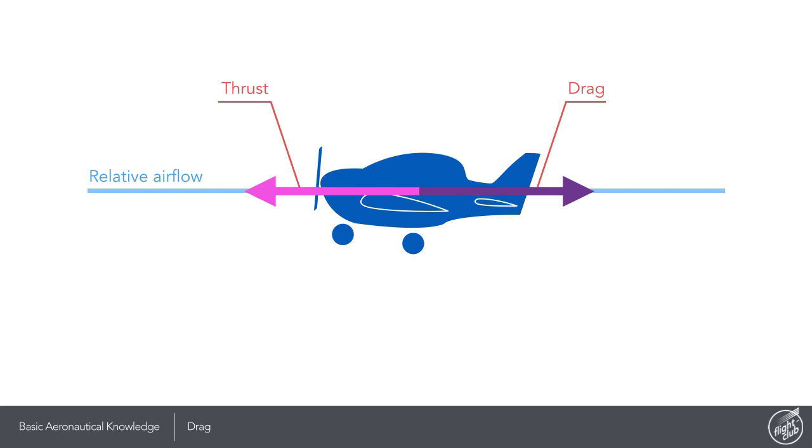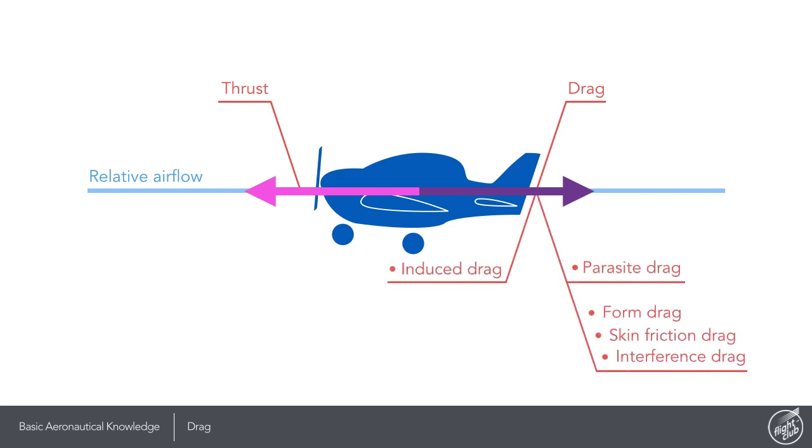Total drag consists of drag forces that are linked to lift production known as induced drag and those that are not linked to lift production known as parasite drag.